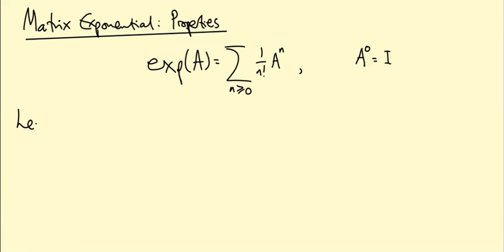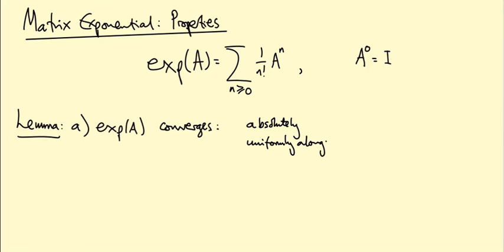Let me state all these properties together in one big lemma. First, most important, this sum converges. It's a power series, it converges. Moreover, it converges absolutely, which means that if you take the norm or absolute value of each term and do the sum, that still converges. It actually converges in another nice way too. It converges uniformly along with all its partial derivatives on any bounded set of matrices.